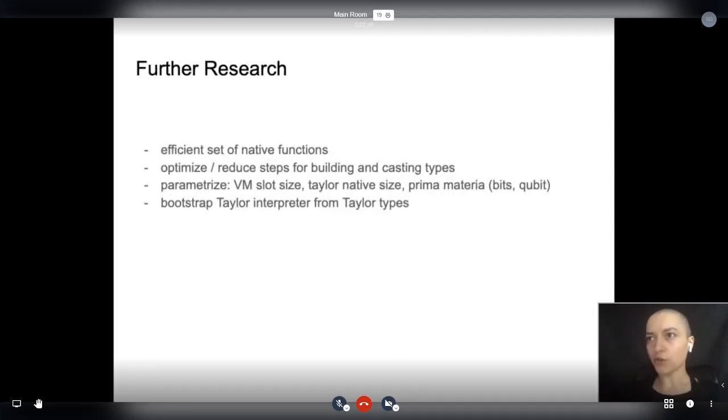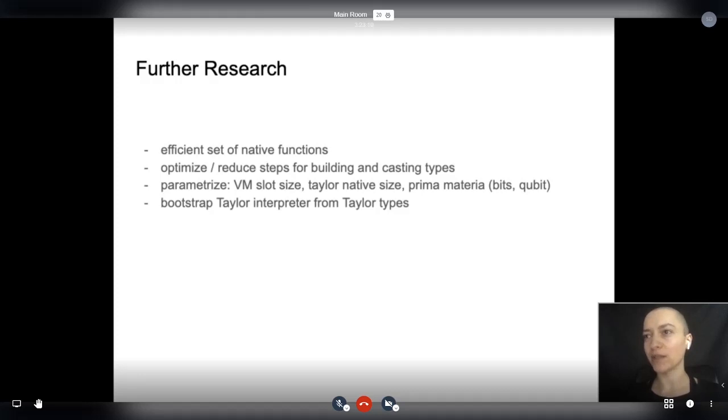Further research for the near future is an efficient set of native functions, optimizing the steps needed for building and casting types, and bootstrapping the Taylor interpreter so it uses Taylor produced types and parameterizing based on VM slot size, Taylor's native sizes and prima materia. This was the diagram that I showed you earlier.